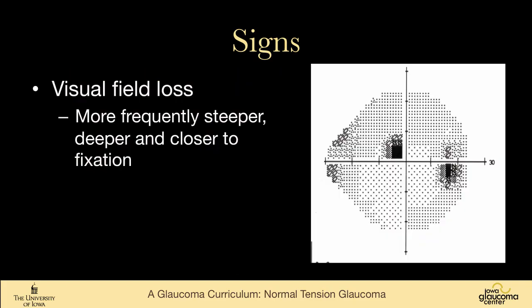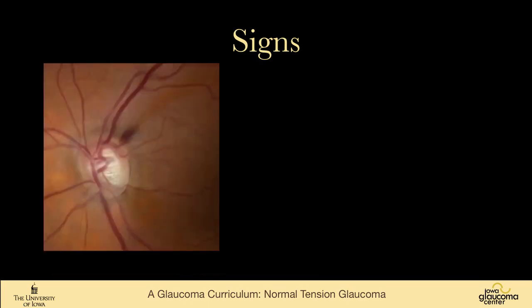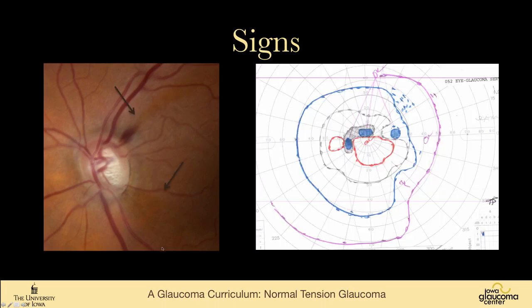Like other forms of glaucoma, these patients have visual field loss, but it's more frequently steeper, deeper, and closer to fixation. These kinds of field defects with a very profound drop right at fixation are somewhat more common in patients who have normal tension glaucoma. This patient has a notch in the right eye with a fixation-splitting field defect — very characteristic of normal tension glaucoma. Another patient has vertical cupping, a hemorrhage, defects in the nerve fiber layer, and again classic fixation-splitting visual field loss.